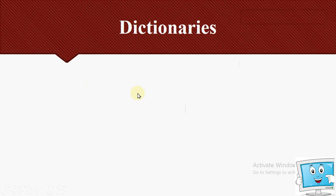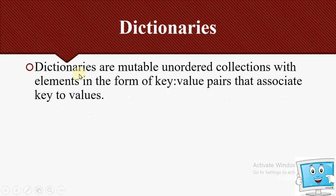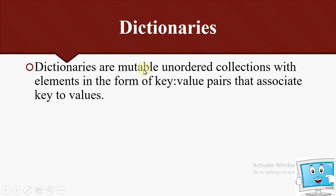Last time we learned about lists and tuples. We have another data type in Python which is Dictionary. Dictionaries are mutable, unordered collections with elements in the form of key-value pairs that associate keys to values. Dictionaries are mutable — meaning you can change values — unlike tuples which are immutable. We can change any key-value in the dictionary.